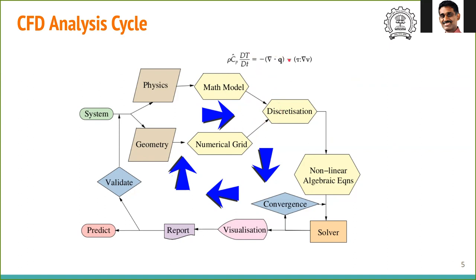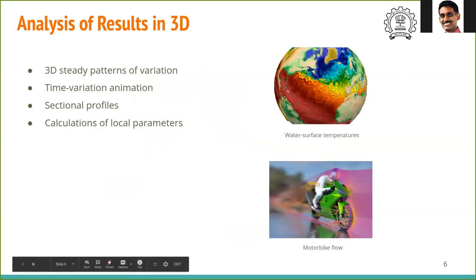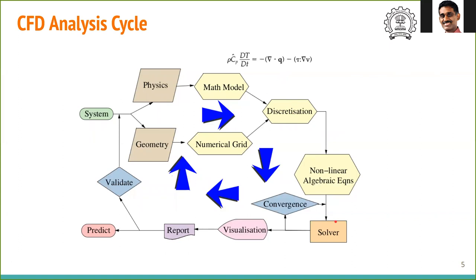The differential equation is converted to algebraic equations. You've seen how to solve systems of equations in numerical methods - Gauss-Seidel, LU decomposition - these are the solvers. These algebraic equations are solved and you look for convergence. Convergence means the equations have reached a final value beyond which there's no significant change. Many times people don't check for convergence and look at the data, which will be wrong. Always ensure you've reached a converged result before examining the solution.